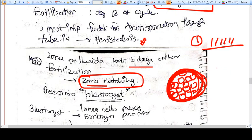Like a hen's baby comes out from the egg, a similar procedure is called zona hatching.